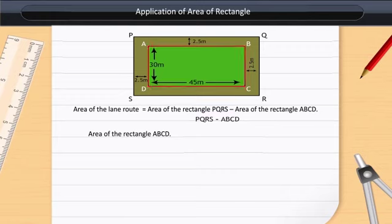Area of rectangle ABCD equals length times breadth, which is 45 times 30 square meters, equals 1350 square meters.